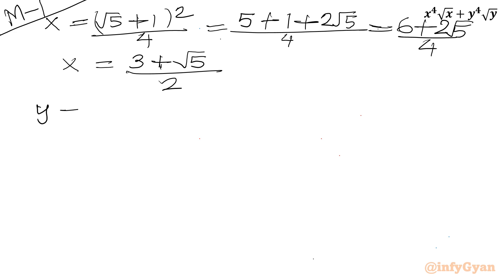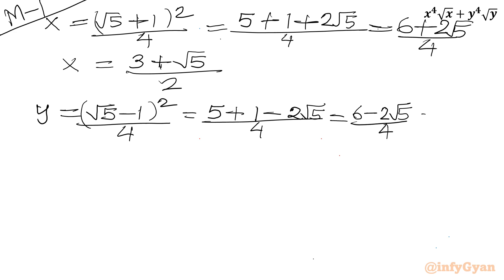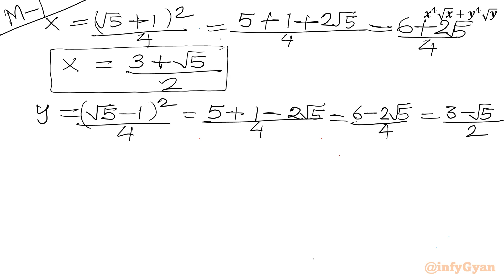Now for y = (√5 - 1)² / 4. Expanding using (a - b)²: a² + b² - 2ab = 5 + 1 - 2√5 = 6 - 2√5, divided by 4. So y = (3 - √5) / 2. Thus x = (3 + √5) / 2 and y = (3 - √5) / 2.